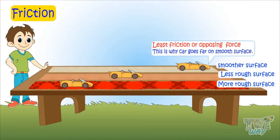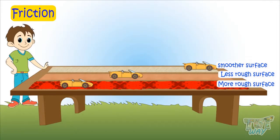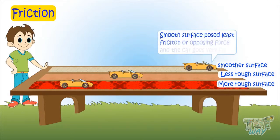That is why objects go very fast and smoothly on a smoother surface, because there is no or very little opposing force, which is friction. So smooth surfaces pose less friction and the car goes very far.